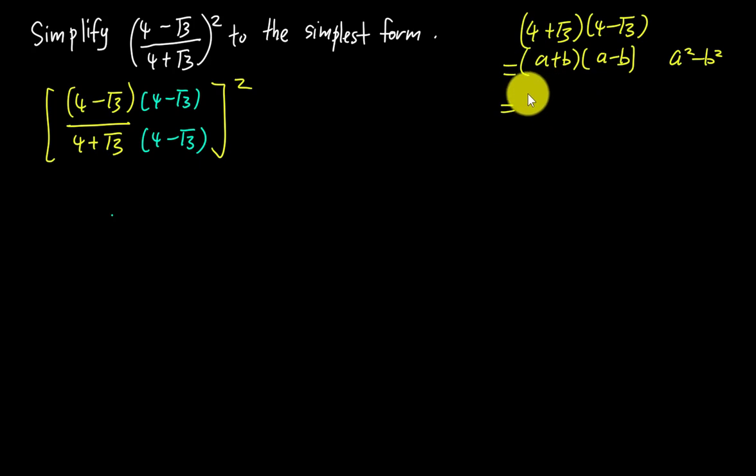So a² is 4 squared, minus b² which is (√3)², which gives us 16 minus 3 equals 13. The denominator is 13.